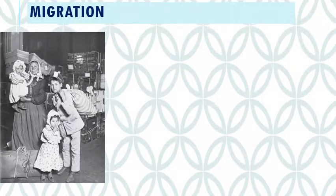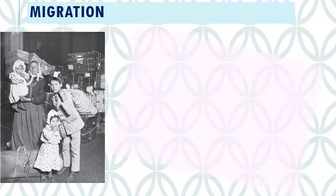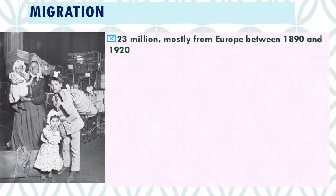Despite all those horrific things, the cities of America seemed like a haven of opportunity — a place where you could make it and be somebody if you were an immigrant who had braved all the horrible things that could happen, left their homeland in search of a better life. Between 1890 and 1920, there were about 23 million migrants to the United States, dramatically increasing the U.S. population.